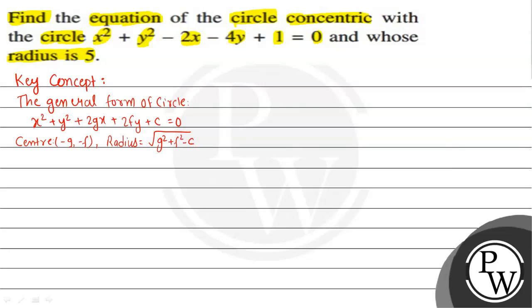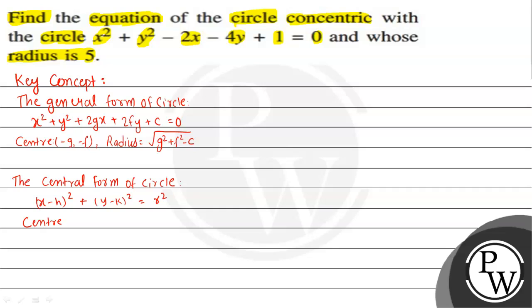The central form of a circle is given by (x - h)² + (y - k)² = r², where (h, k) is the center and r is the radius.